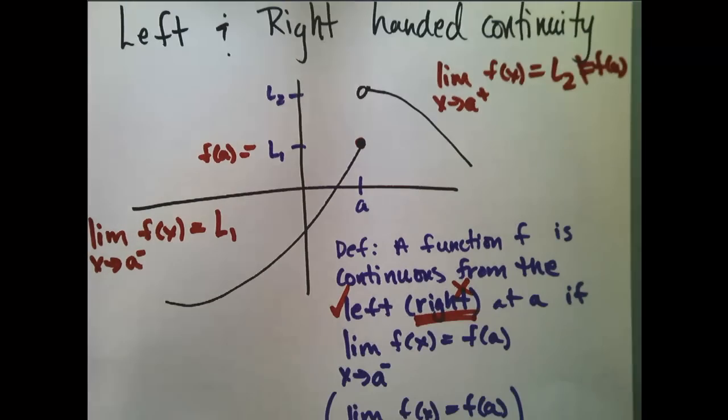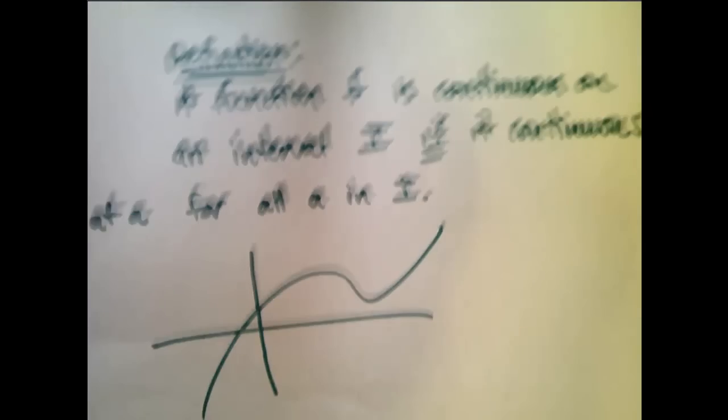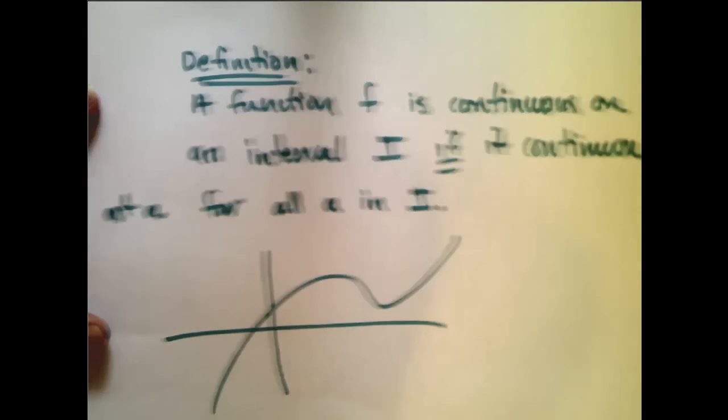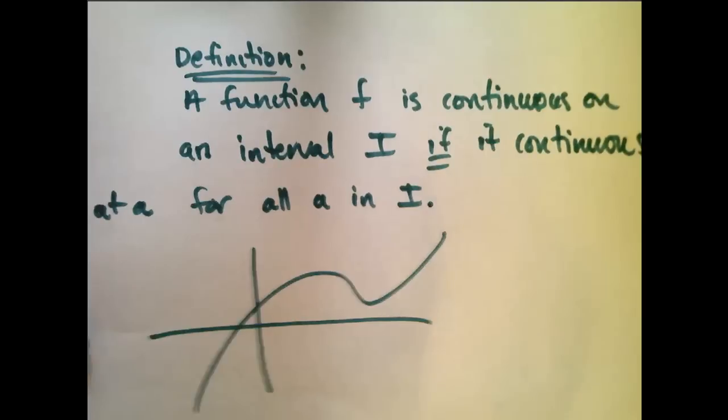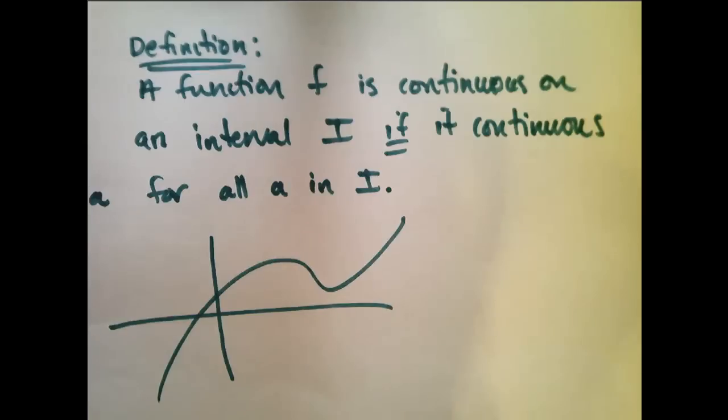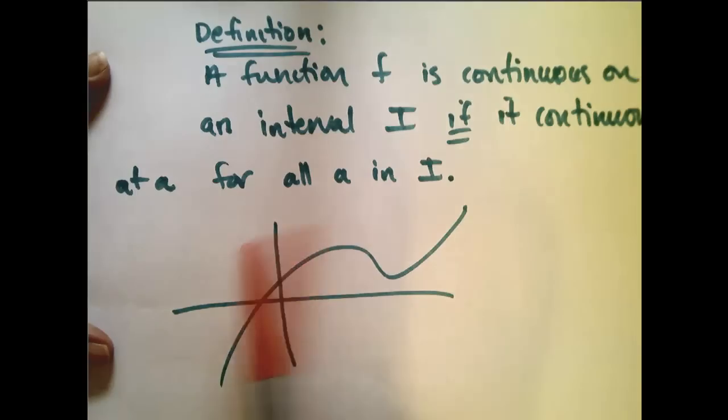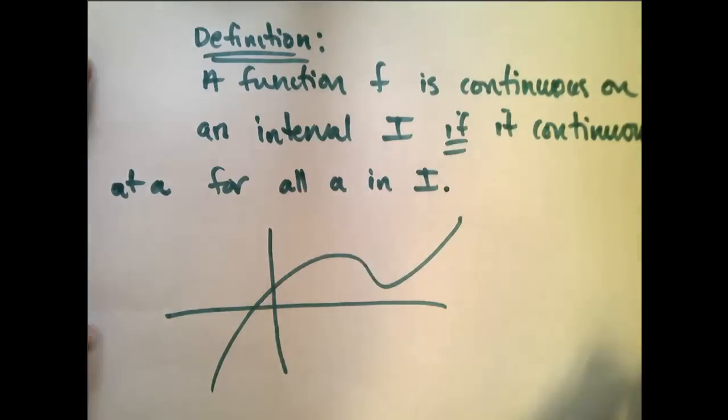Now, we want to extend this idea beyond continuity at a number. We have this new definition, and this is more in line with probably what you all said when describing what it meant for a function to be continuous. A function f is continuous on an interval I if it is continuous at a for all a in I.